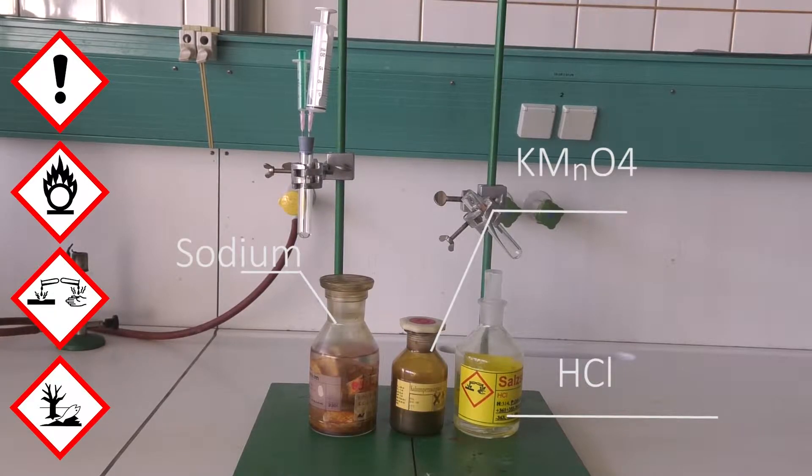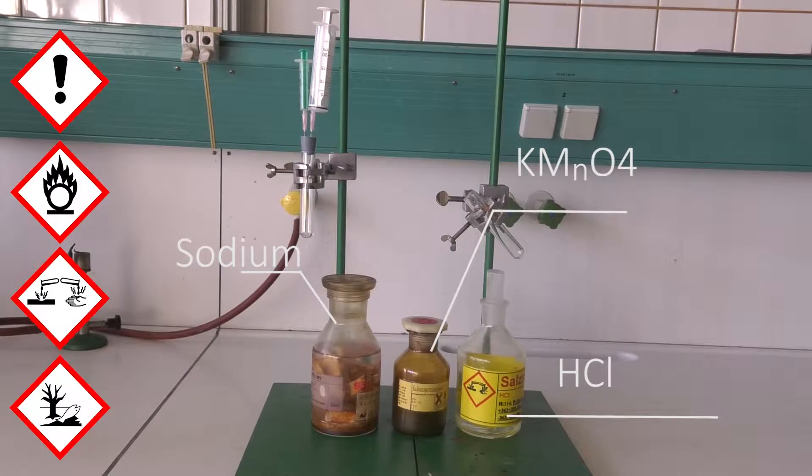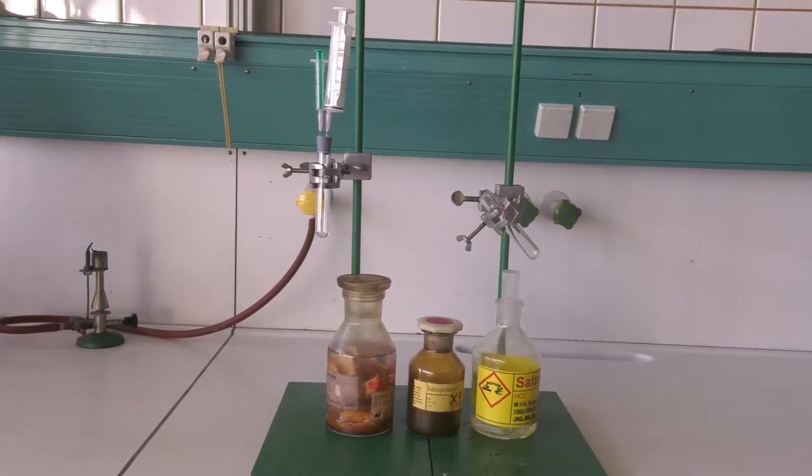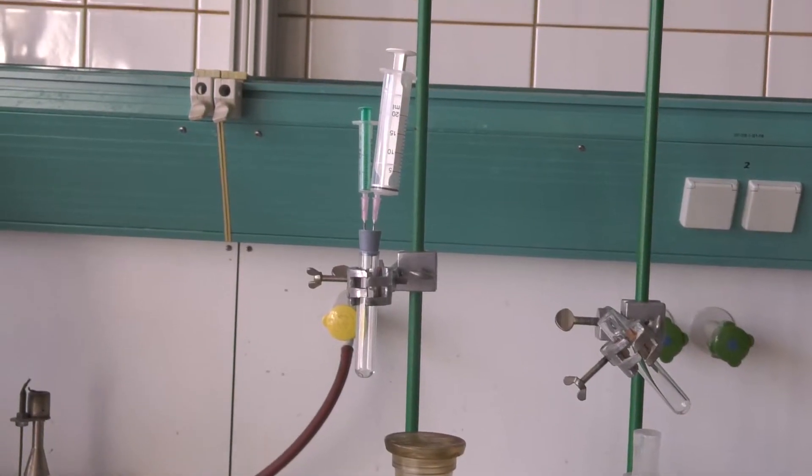For the sodium chloride synthesis we need sodium, potassium permanganate, concentrated hydrochloric acid and test tubes.